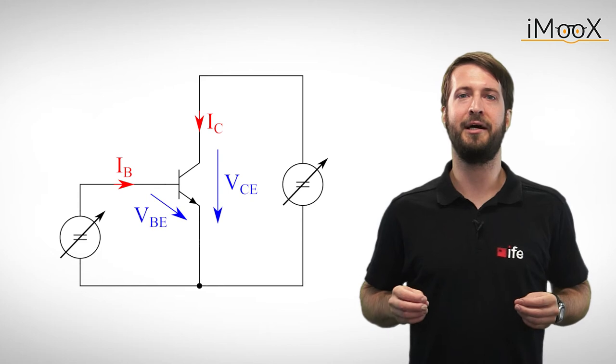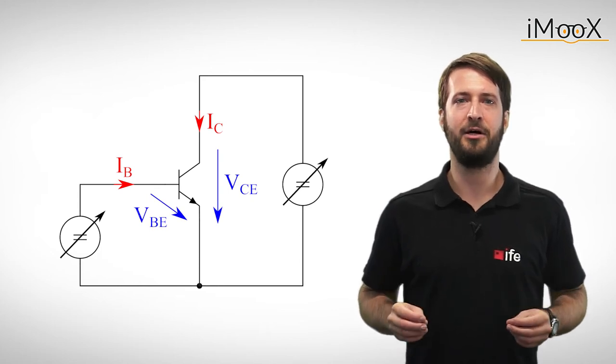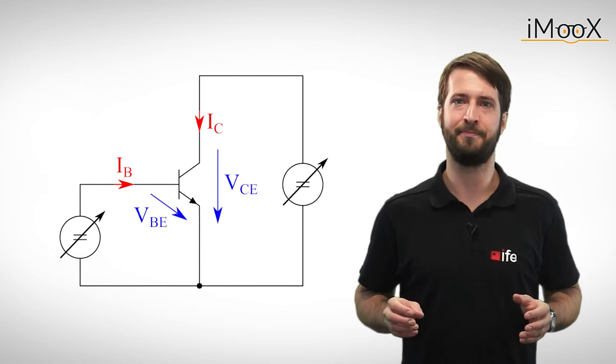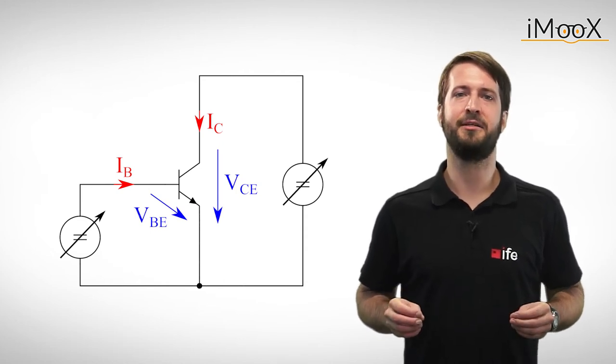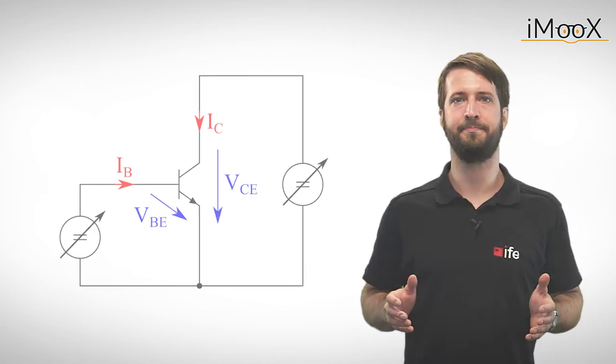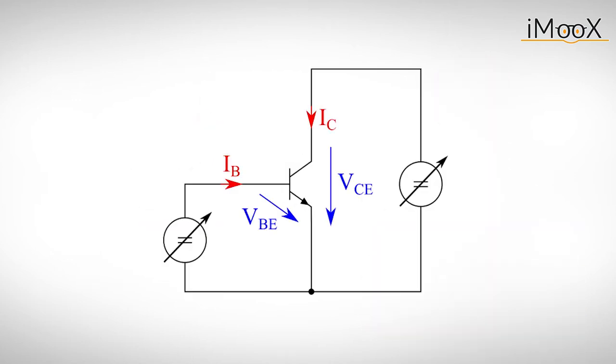In order to get a better understanding of the behavior of the bipolar transistor, we have to do a variety of measurements. So let's consider the following measurement arrangement to derive some dependencies of the transistor. The circuit consists of an NPN transistor and two variable voltage sources to control the base emitter voltage VBE and the collector emitter voltage VCE.